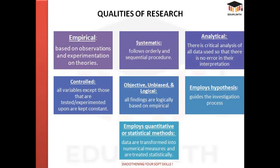Research is objective, unbiased, and logical — everything depends upon the findings. It employs a hypothesis, which guides the investigation process. A hypothesis is an assumption about the result of research; that pre-assumed result can be true or false — it is one of the options. Research also employs quantitative or statistical methods, meaning data are transformed into numerical measures and treated statistically.